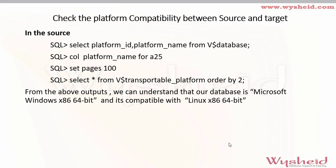Let's go through the steps. First, confirm whether the source and target versions are compatible. Run: SELECT platform_id, platform_name FROM v$database — this shows the source database platform ID and name. Then cross verify compatibility with Linux by querying SELECT * FROM v$transportable_platform ORDER BY 2. From the output, we look for the endian format — in our example, Microsoft Windows x86 64-bit and Linux x86 64-bit should be under the same endian format.